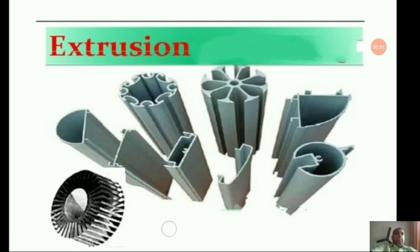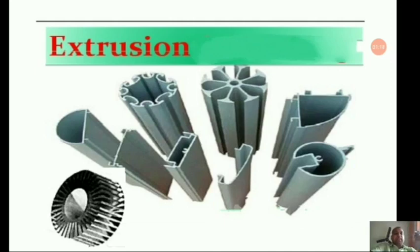Extrusion — you can see over here, these are the extruded products. Extrusion is another operation of bulk metal forming. It is the process of confining the metal in a closed cavity and then allowing it to flow from only one opening, so that the metal takes the shape of that particular opening or orifice. You can relate this operation to the squeezing of toothpaste from a toothpaste tube — the toothpaste comes out from an opening. This extrusion process is identical to that phenomenon.